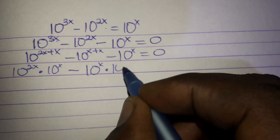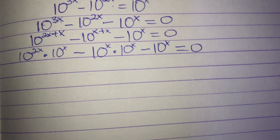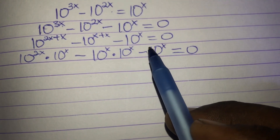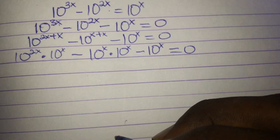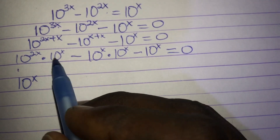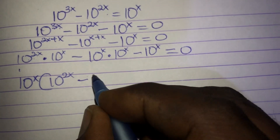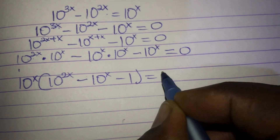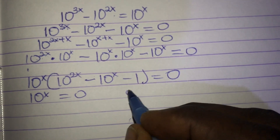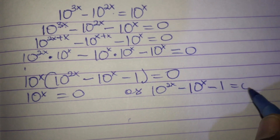It's very interesting — we have 10 exponent x appearing in each term. We can factorize 10 exponent x out. So factoring gives: 10 exponent x times (10 exponent 2x minus 10 exponent x minus 1) equals zero. This means either 10 exponent x equals zero, or 10 exponent 2x minus 10 exponent x minus 1 equals zero.